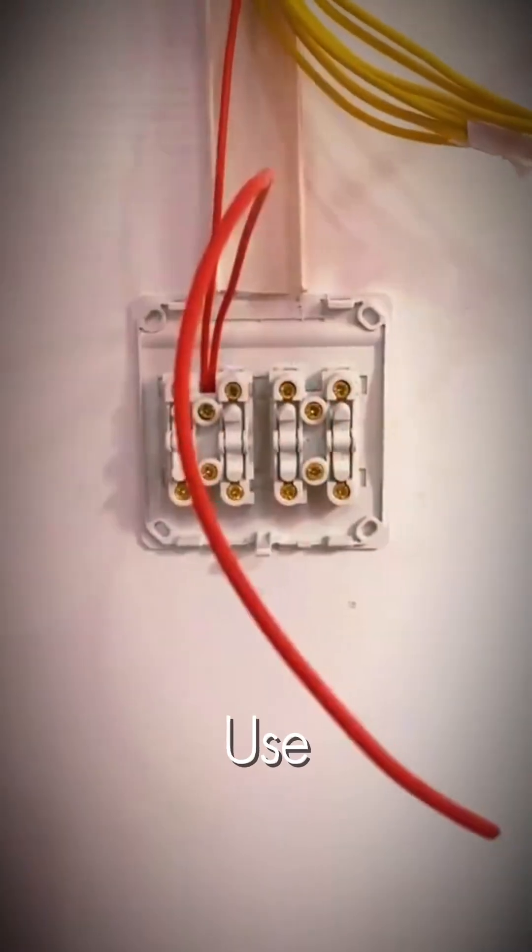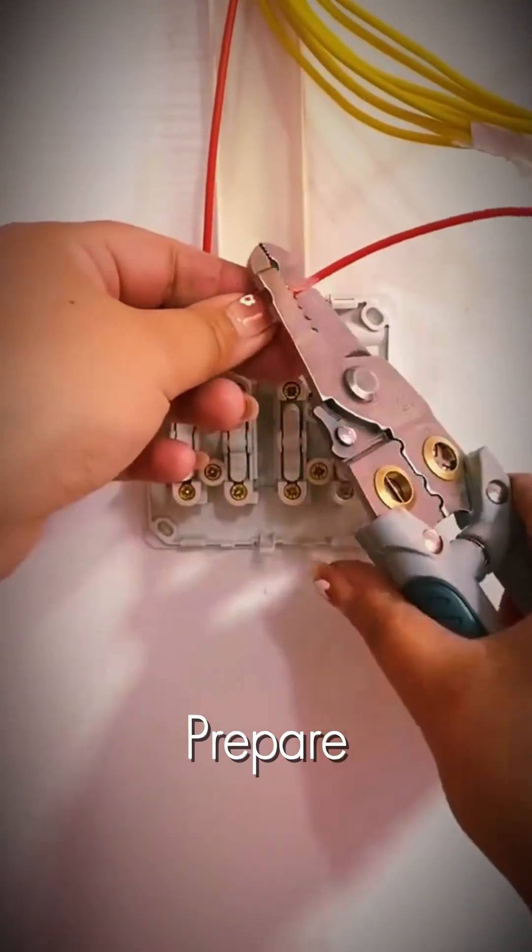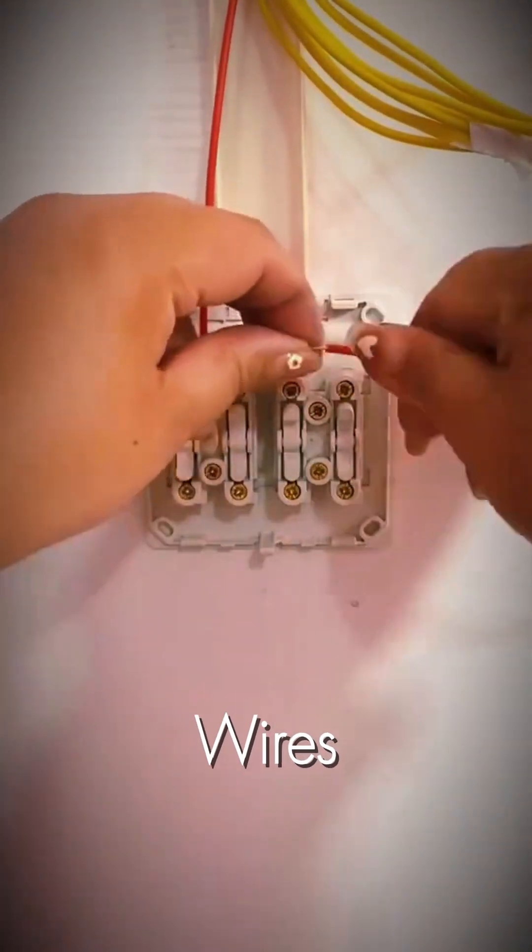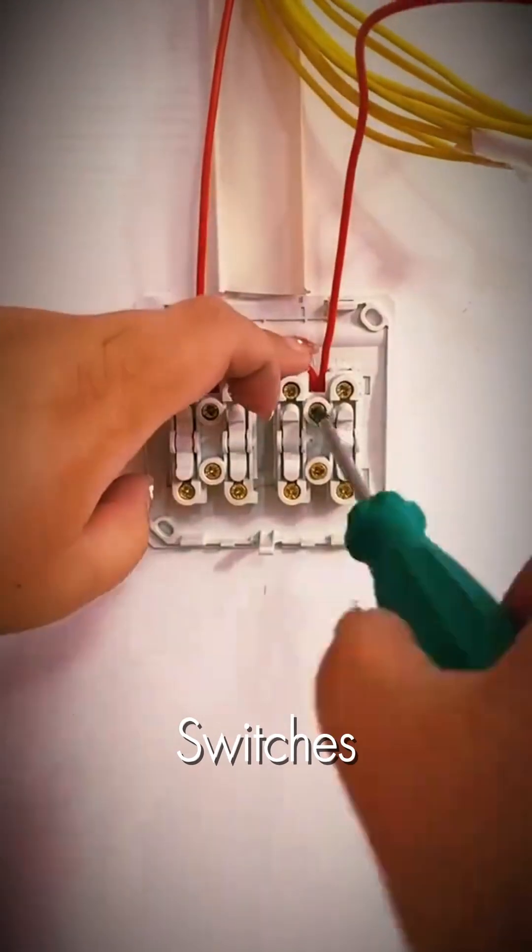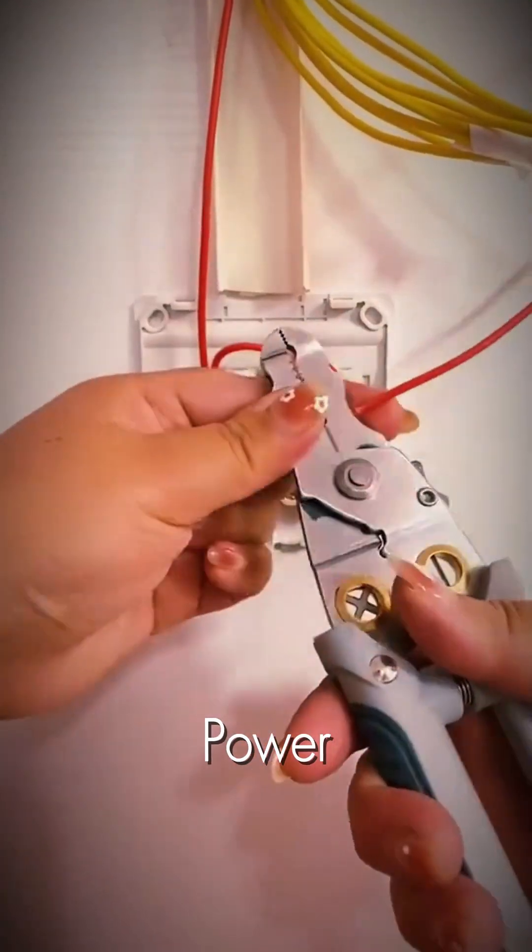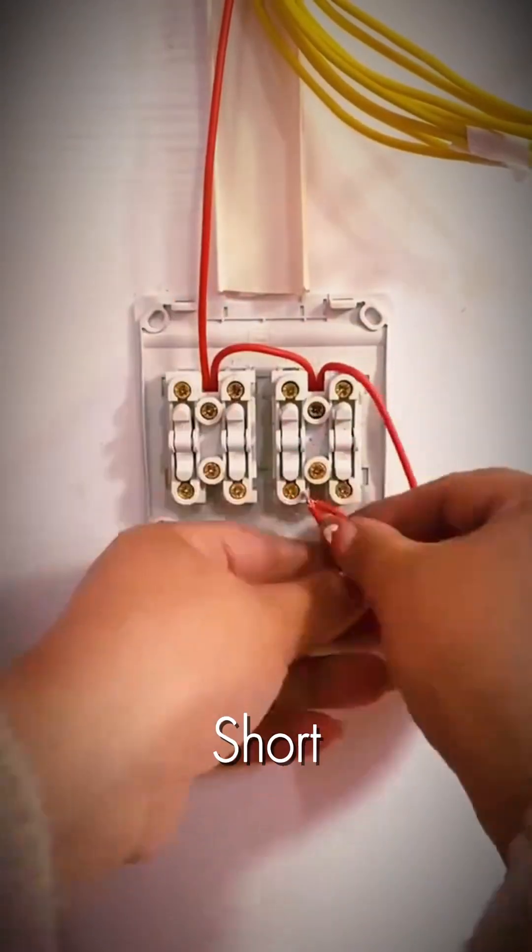First, we use precision strippers to prepare the red input wires. Since we have four switches, we need to bridge the power across all four input terminals using short jumper wires.